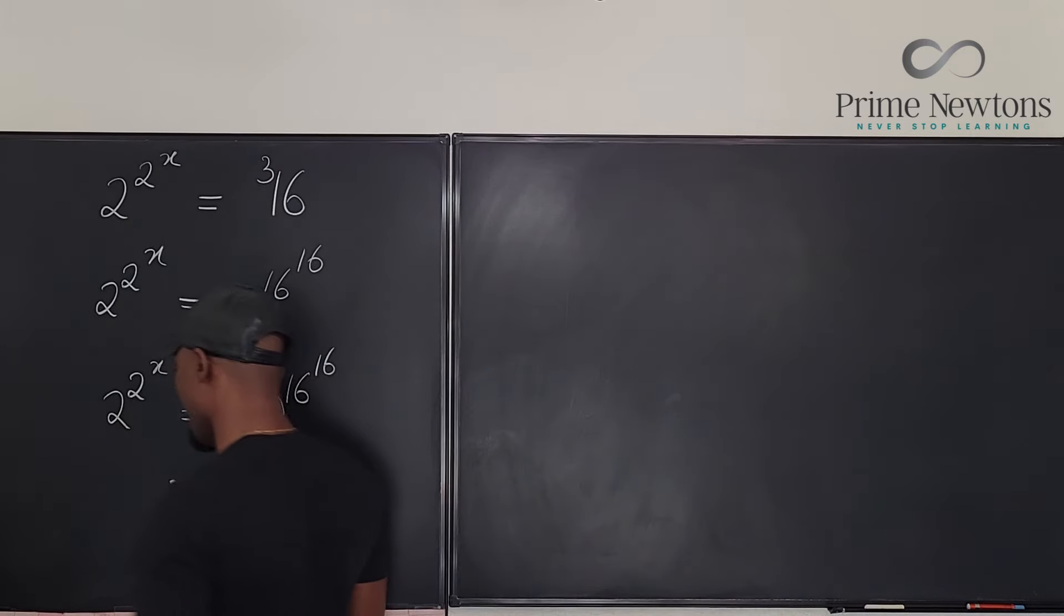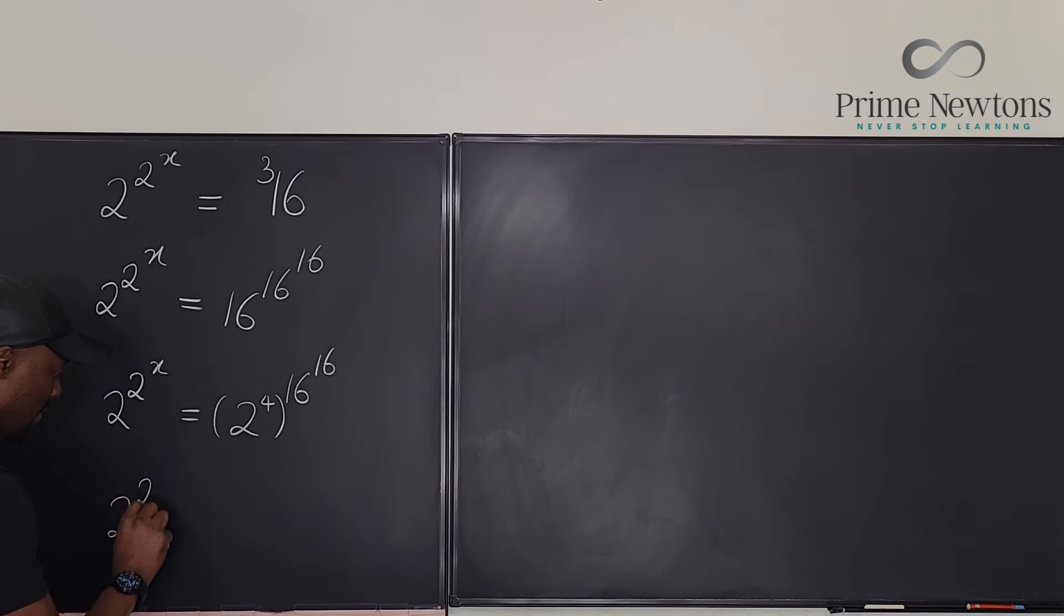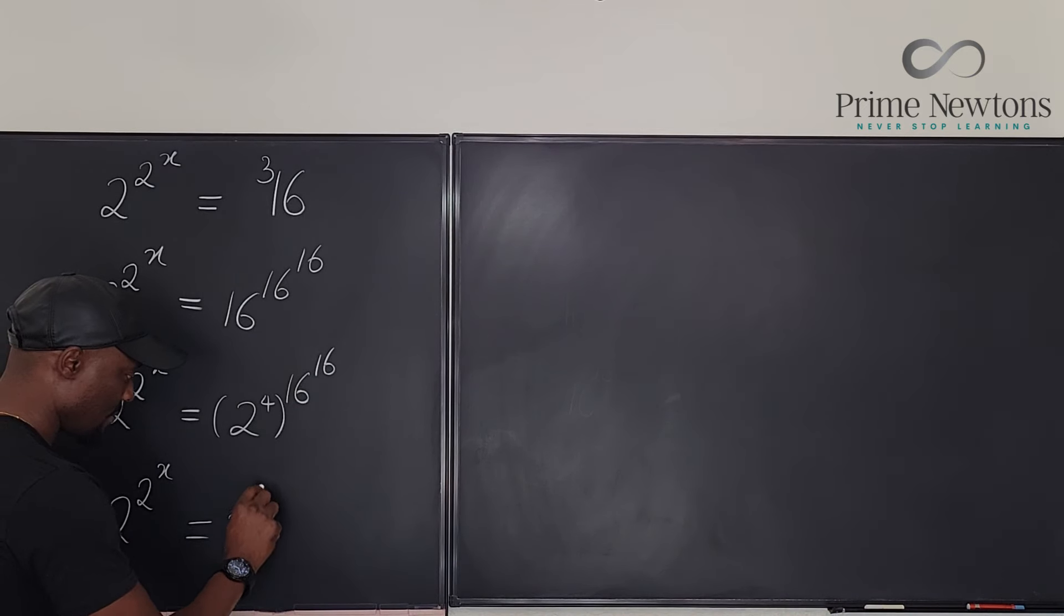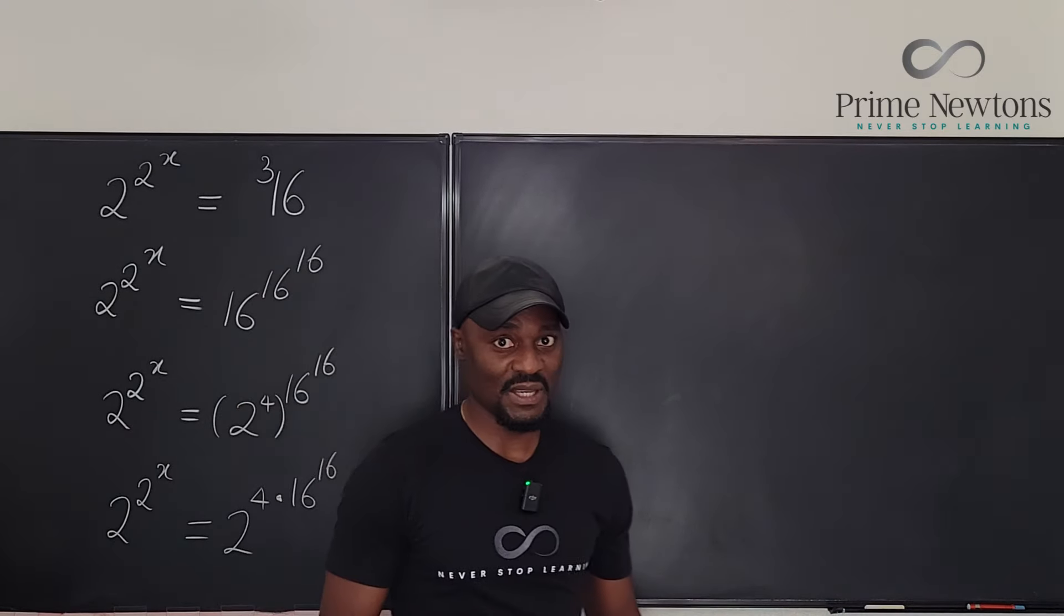So this is what I'm going to have. I'm going to have 2 to the 2 to the x will be equal to this is now going to be 2 to the 4 times 16 to the 16. Do you see how easy this has become?